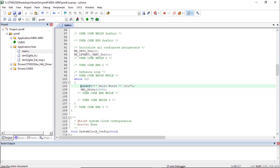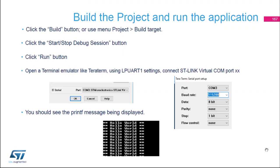Save the file, then build the project using Project > Build Target or F7. The code builds successfully. Enter the debug session via Debug > Start Debug, then run the code using the Run button or F5. Open Tera Term and connect to the COM port associated with the ST-Link virtual COM port. Configure the serial port to 115,200 baud, 8 data bits, no parity, 1 stop bit.